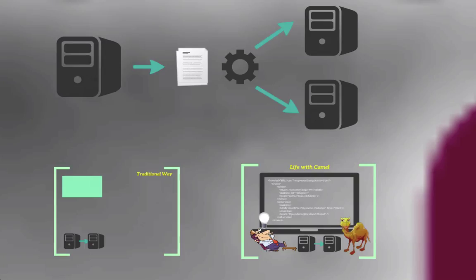From a developer's perspective, when integrating between applications, there are four main things that you need to do. First of all, it's connecting to various systems, and then we have to implement the routing logic. And, of course, we have to transform the data into various different formats. And lastly, we have to write our own business code, which is the most important part of the whole integration process.